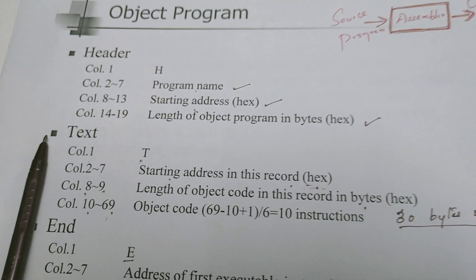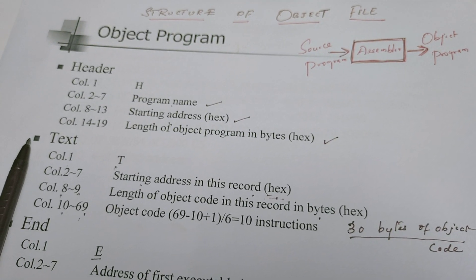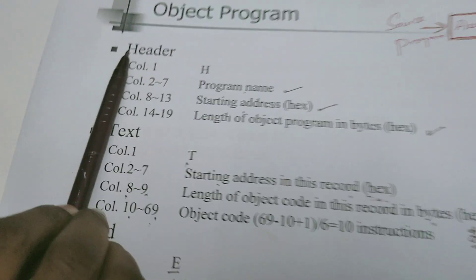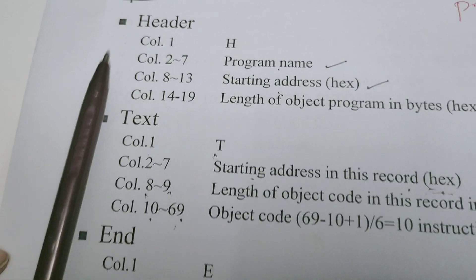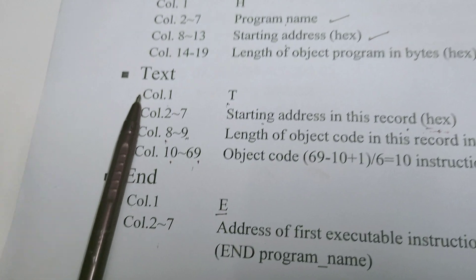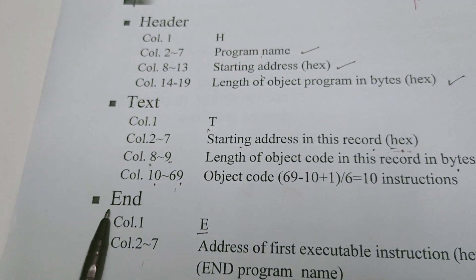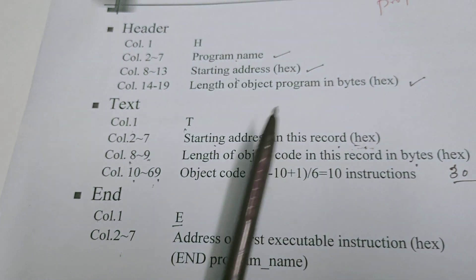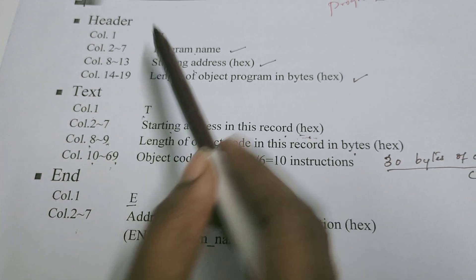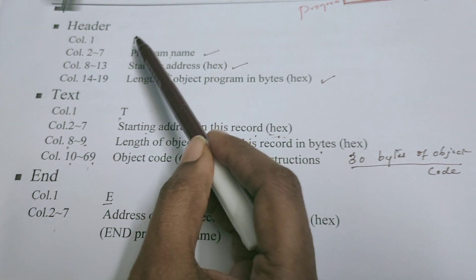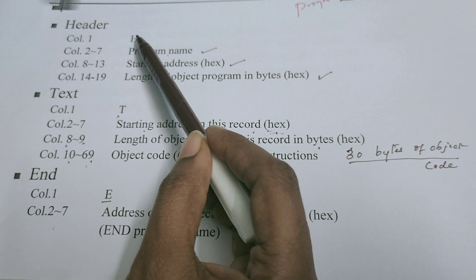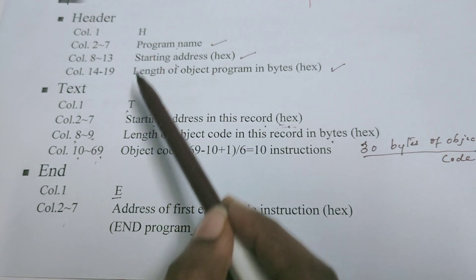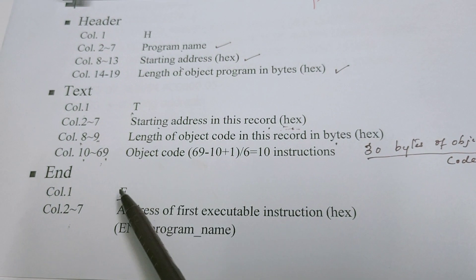The object file contains majorly three types of record: one is the header record, the text record, and the end record. In order to differentiate among the records, the record begins with the letter H, T, and E respectively.